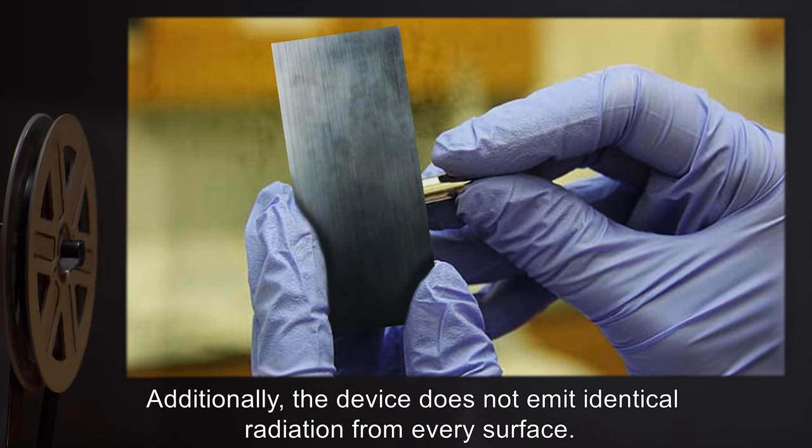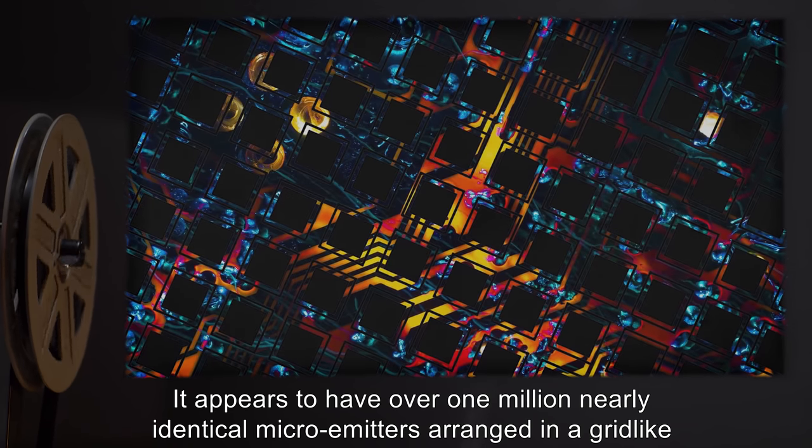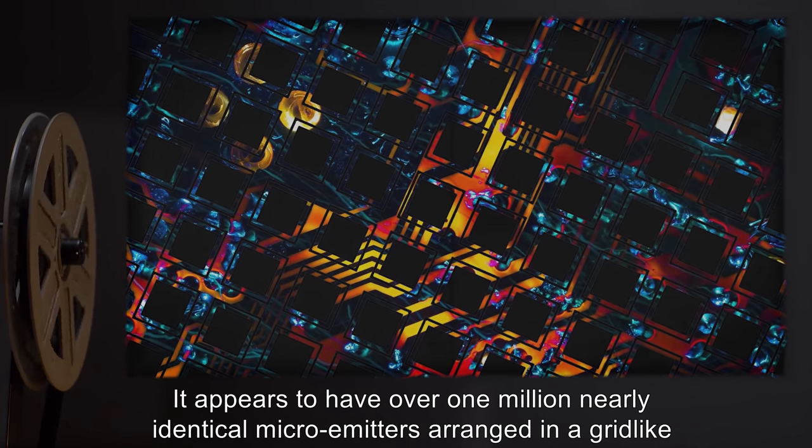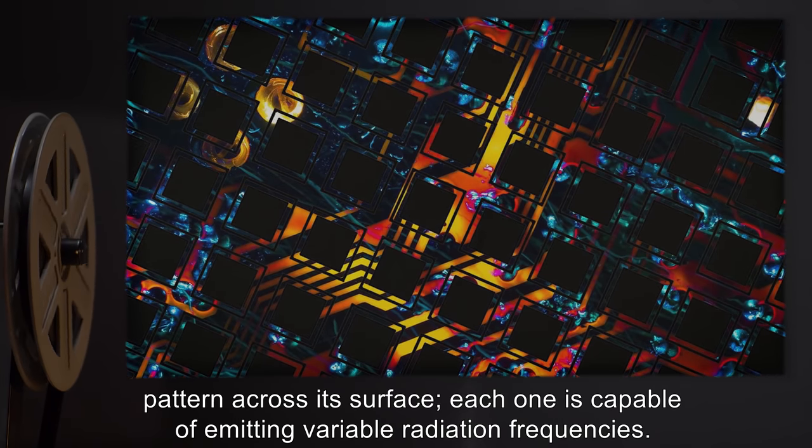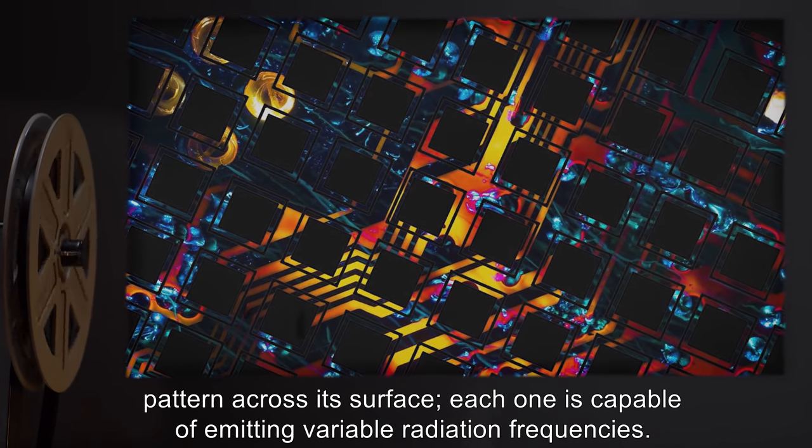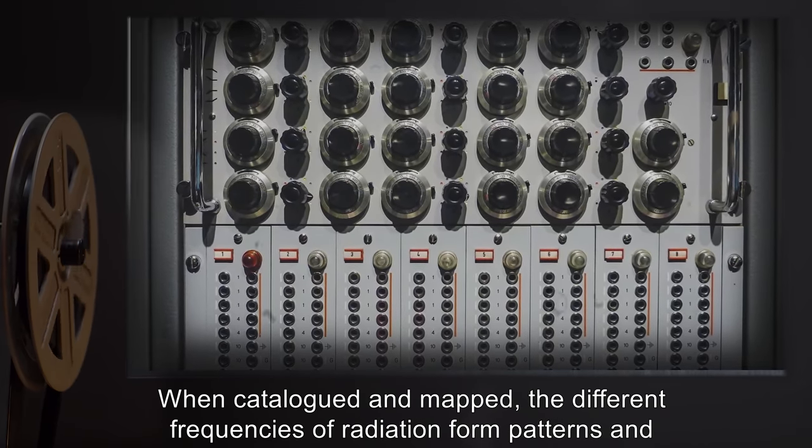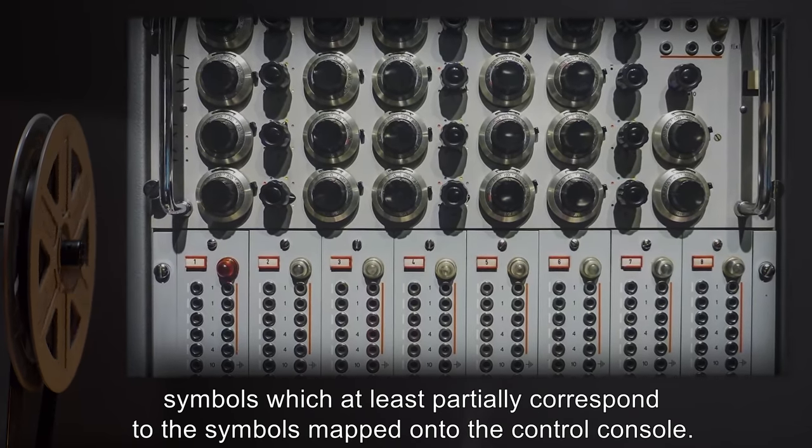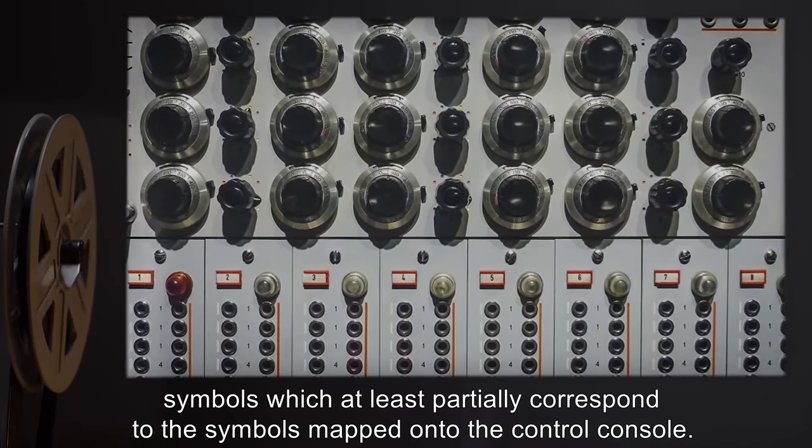Additionally, the device does not emit identical radiation from every surface. It appears to have over 1 million nearly identical micro-emitters arranged in a grid-like pattern across its surface. Each one is capable of emitting variable radiation frequencies. When catalogued and mapped, the different frequencies of radiation form patterns and symbols which at least partially correspond to the symbols mapped onto the control console.